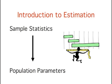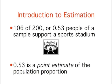One of the major applications of statistics is estimating population parameters from sample statistics. For example, a poll may seek to estimate the proportion of people in a city that support a proposition to build a new sports stadium.